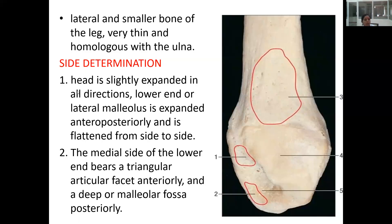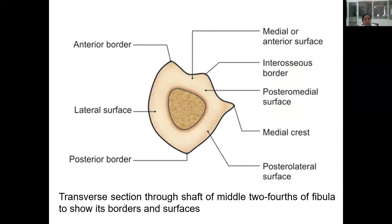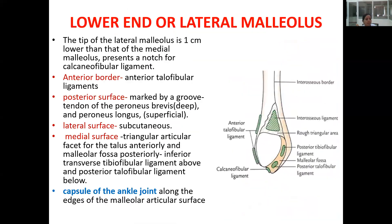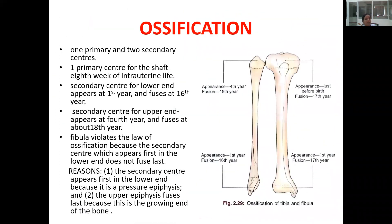For side determination: the head has the styloid process, the lower end has a triangular articular facet anteriorly and the malleolar fossa posteriorly. The strong features discussed include ossification and the clinical aspect of fractures — for example, damage to the common peroneal nerve may cause foot drop. Keep studying, thank you.